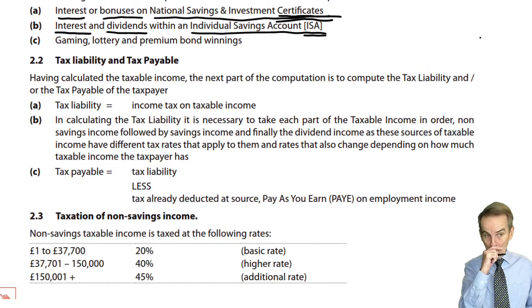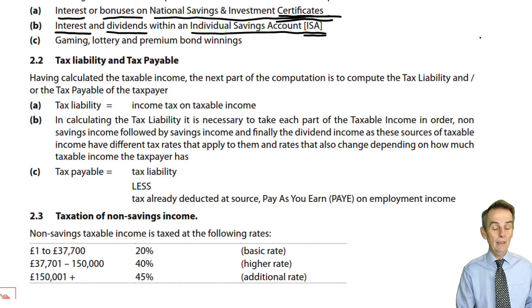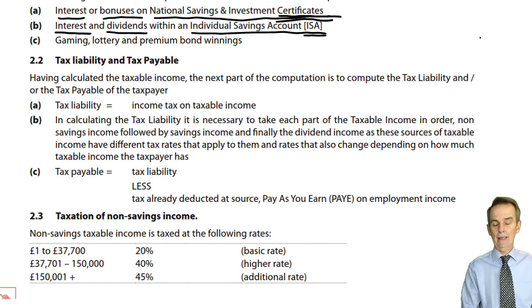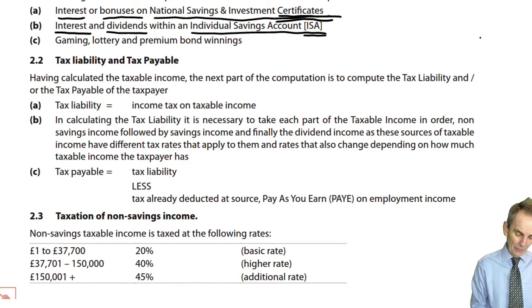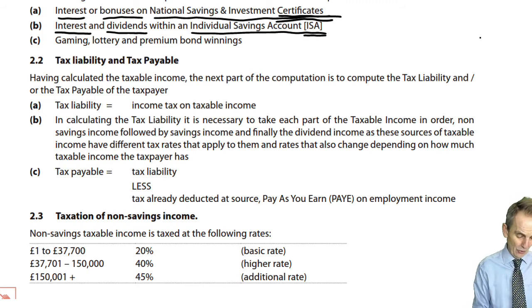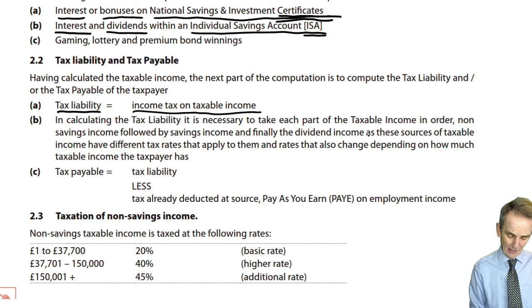Having got taxable income, we enter the second phase: computing the tax liability, which is simply the income tax on taxable income. It is necessary to take each part of the taxable income in order: non-savings income first, followed by savings income, and finally dividend income. Each may have differing tax rates that apply, and rates also change depending on how much taxable income the taxpayer has.